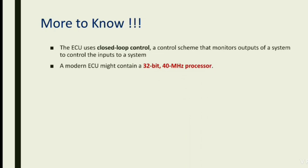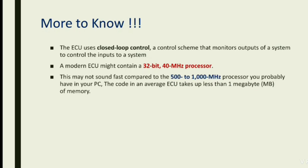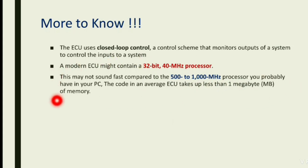A modern ECU might contain a 32-bit, 40 MHz microprocessor. This may not sound fast compared to a 1000 MHz processor you probably have in your PC. Also, your PC may have 2 GB, 4 GB, or 8 GB of RAM, but this microcontroller has just 1 MB of memory — yet it controls all this information at 50 MHz to 1000 MHz range. That is what makes embedded systems so remarkable and different.